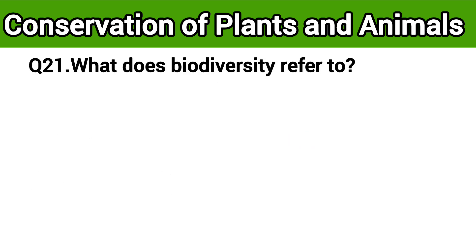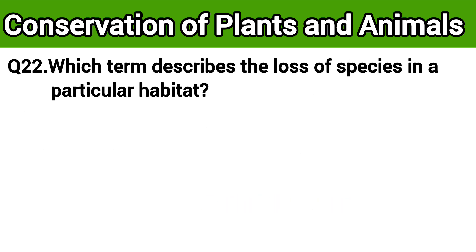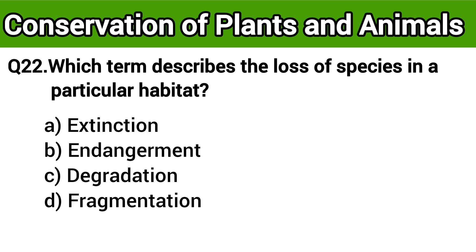Question number 21: What does biodiversity refer to? The right answer is option D: all of the above. Question number 22: Which term describes the loss of species in a particular habitat? The right answer is option A: extinction.